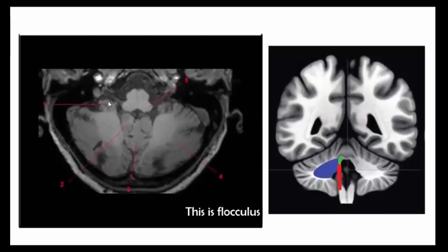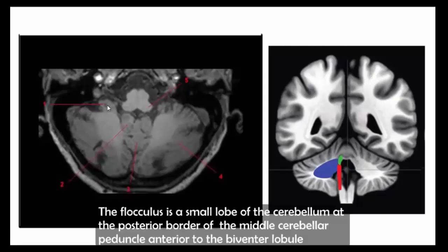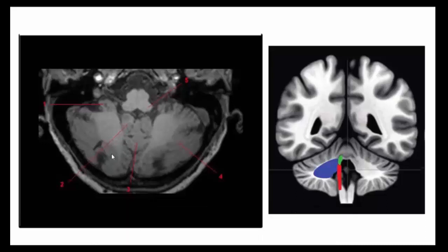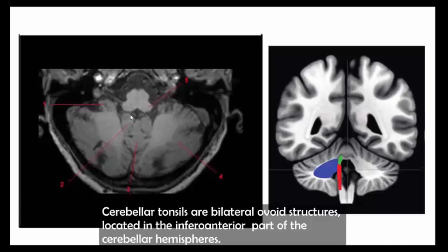This is the flocculus. The flocculus is a small lobe of the cerebellum at the posterior border of the middle cerebellar peduncle, anterior to the biventral lobule. The cerebellar tonsils are bilateral ovoid structures located in the inferior anterior part of the cerebellar hemisphere.